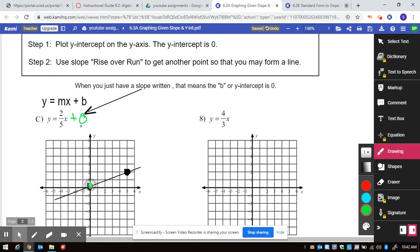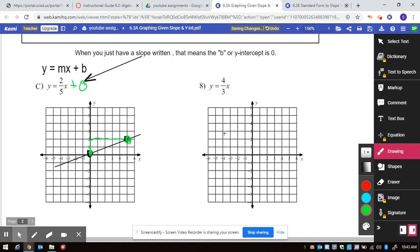That means start at zero, go up one, two over one, two, three, four, five. And then you get your points and you can draw your line.